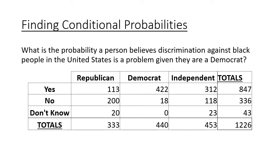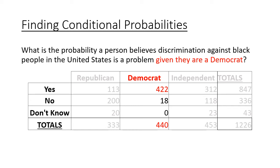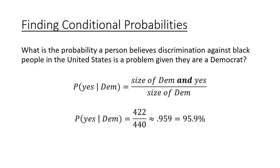Next question: what is the probability a person believes discrimination against black people is a problem, given that they are a Democrat? This may sound similar, but the given is now different. Given they are a Democrat, I can ignore Republicans and Independents — I'm only looking at the Democrat column. The numerator is still that same 422 people who said yes and are Democrat, but now my sample size is just the 440 total Democrats. So 422 divided by 440 gives 0.959.